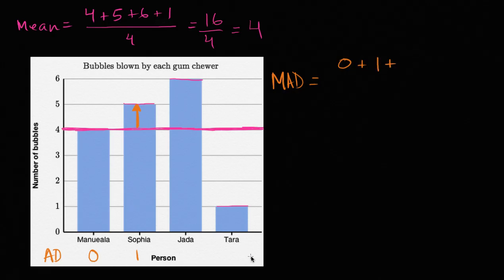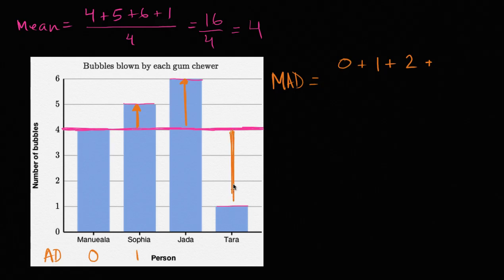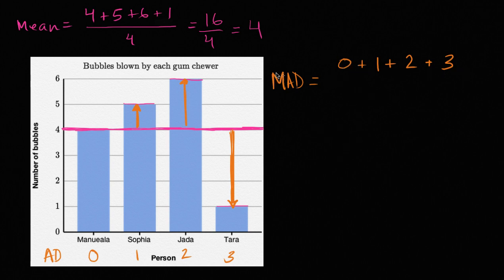Then we have Jada. How much does she deviate from the mean? We can see right here she deviates by two — she is two more than the mean. And how much does Tara deviate from the mean? She is at one, which is three below the mean. So her absolute deviation is three.